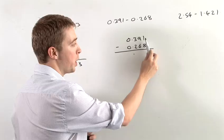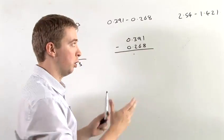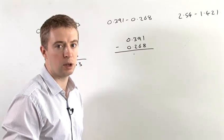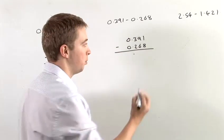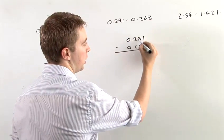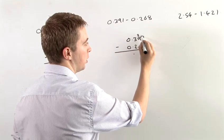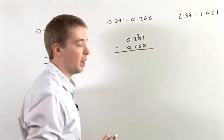So we now have 1 minus 8, which obviously would give us minus 7, but that's not something which we're going to do. As you would in any other subtraction sum, you're going to take a number from here, change that to 8, and put the 1 there to make that 11.